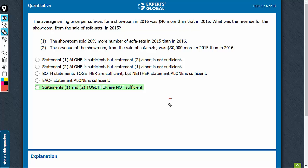In 2016, the average selling price was $40 more than in 2015. So the price in 2015 is P, and in 2016 it's P plus 40.